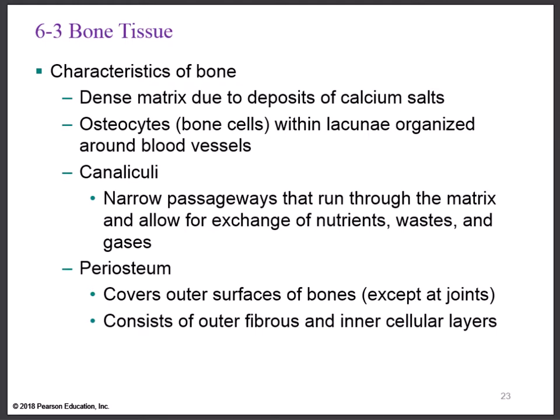The canaliculi will be shown in part three of this lesson. Their job is to allow for the exchange of nutrients, waste products, and gases — bone is a very dynamic, active tissue. Bone also has an outer lining known as the periosteum. The prefix 'peri' means around, like a perimeter, and 'osteo' means bone. It has two components: an outer fibrous layer and an inner cellular layer, which we'll look at in more detail in lesson three.